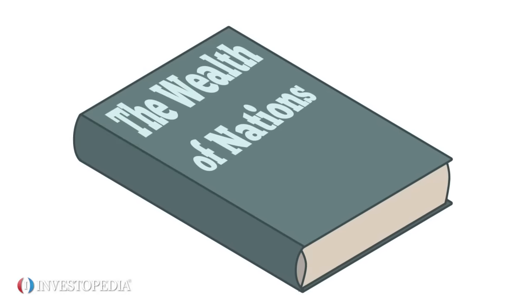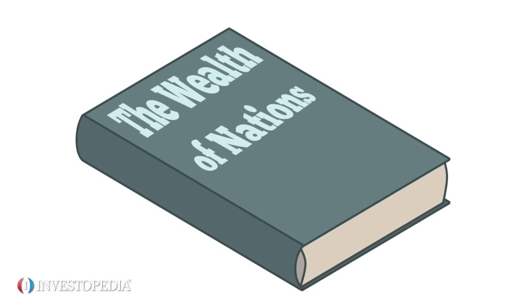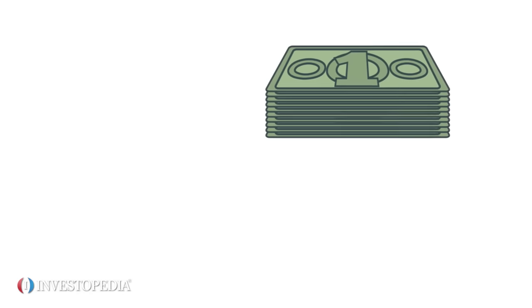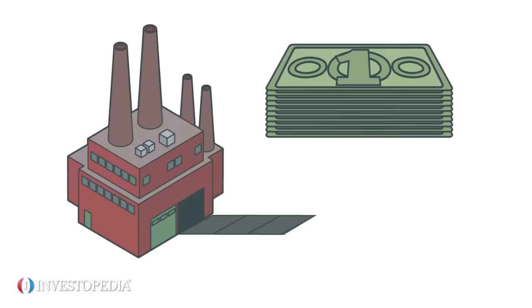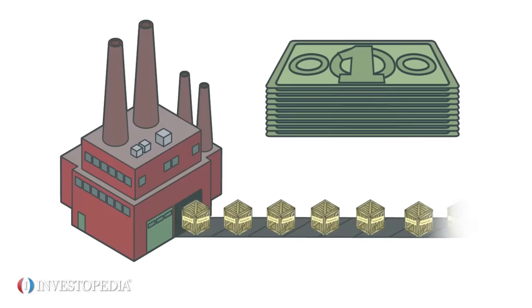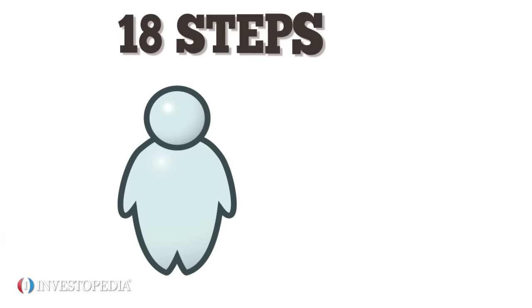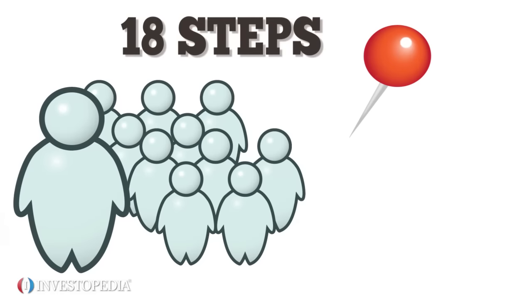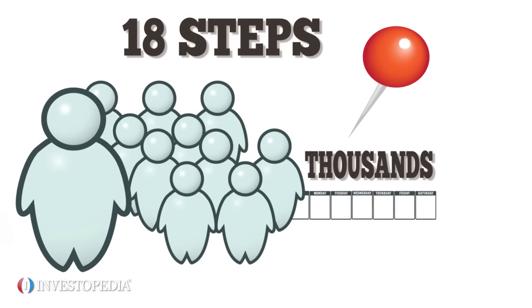Smith's book, The Wealth of Nations, helped drive the move from land-based wealth to wealth created from assembly line production methods. In it, he argued that one man taking 18 steps to create one pin could make only a few pins, but a 10-man assembly line could make thousands per week.